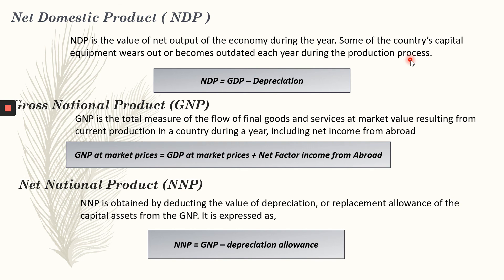NDP is the value of net output of the economy during the year. Some of a country's capital equipment wears out or becomes outdated each year during the production process — as you use the equipment, some becomes outdated or undergoes wear and tear. This is only called depreciation.